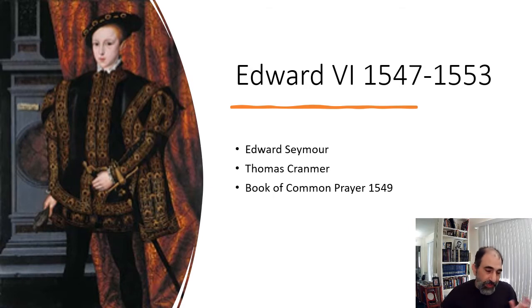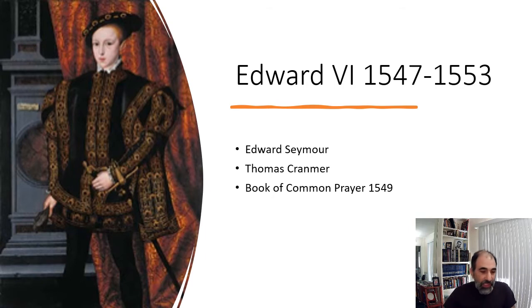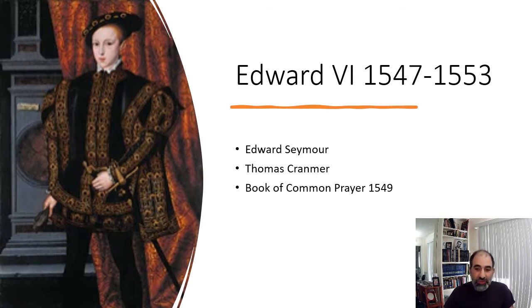One of the core issues gripping England during this time — remember, as we talked about in the previous lecture — is the Protestant Reformation. The Protestant Reformation had gripped Europe and it had gripped England. Henry VIII, of course, broke away and created the Anglican Church, the Church of England. And there was a lot of division in England between the Protestants and the Catholics. Edward Seymour, as well as many other people in England, were concerned about that.